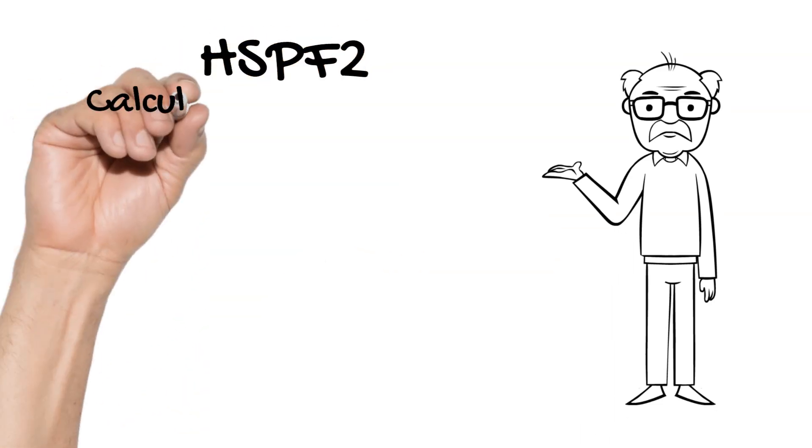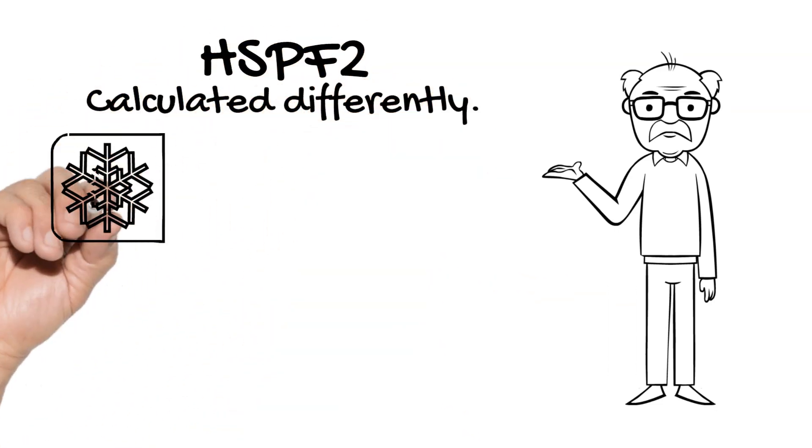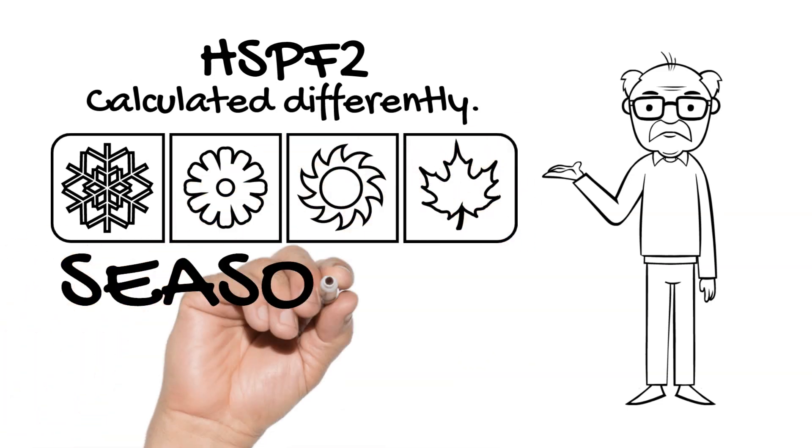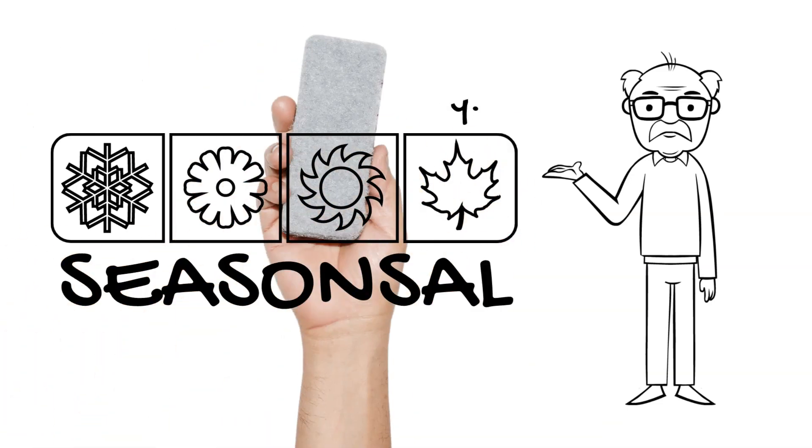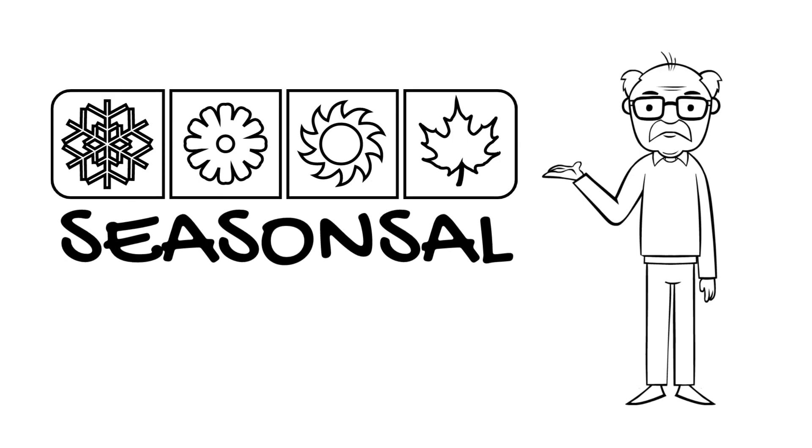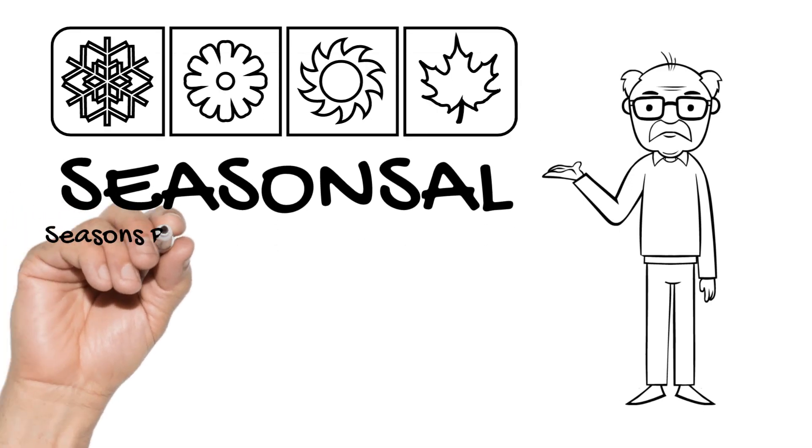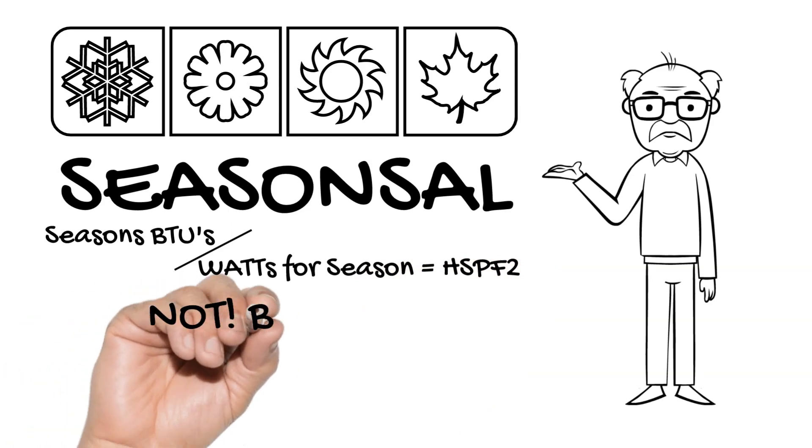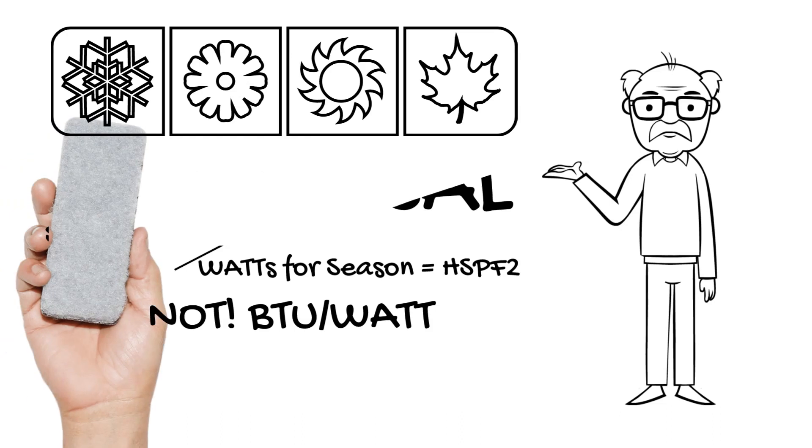HSPF2 is calculated different than cooling. It stands for heating seasonal performance factor. The key difference is seasonal. The total season's heating BTUs are divided by the season's total watts consumed producing that heat. It is not a straight BTU per watt calculation.